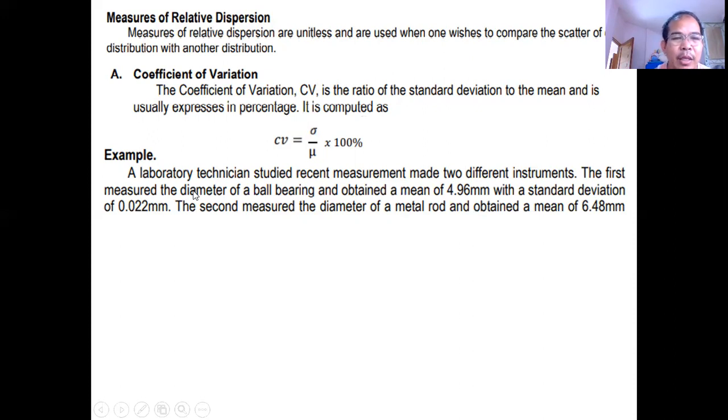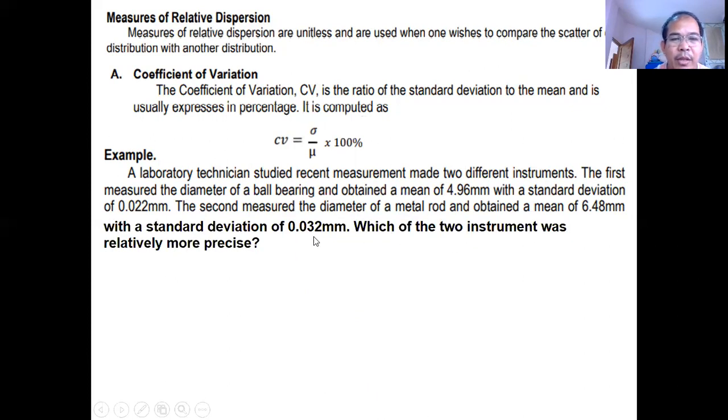Let's have an example. A laboratory technician studied recent measurement made two different instruments. Ang first, measured the diameter of the old bearing and obtained a mean of 4.96. Ang standard deviation ay 0.022 mm. Ang second, measured the diameter of the metal rad and obtained a mean of 6.48 mm, with a standard deviation of 0.032 mm. Ang question, which of the two instruments was relatively more precise? So, dapat dito ay smaller value of CV. Yun ang pinaka-precise. So, isolve natin ang CV ng bawat instrument.